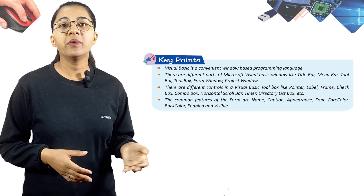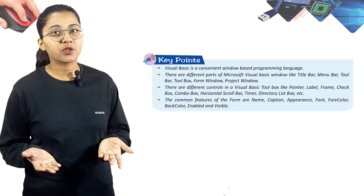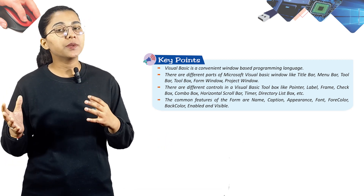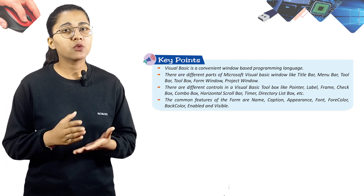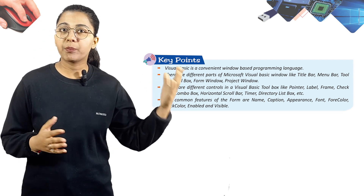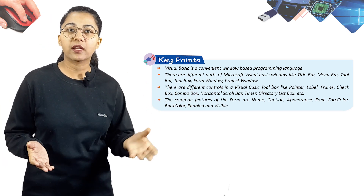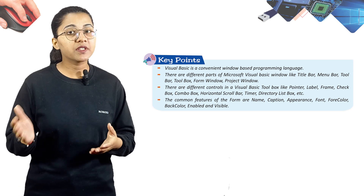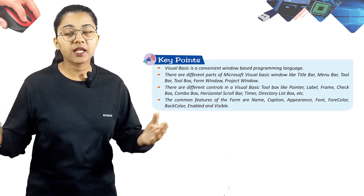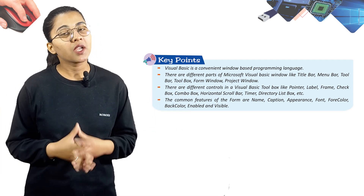The common properties of a form are: Name, Caption, Appearance, Font, ForeColor, BackColor, Enabled, and Visible. These are the different features of a form that we can use when creating one. This concludes our chapter. Soon we will learn about many interesting chapters of computer science. Till then, revise what we have learned today. Thank you.